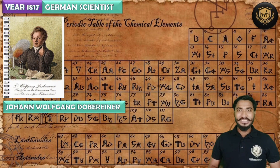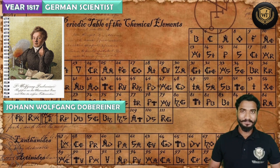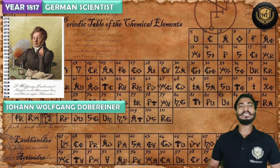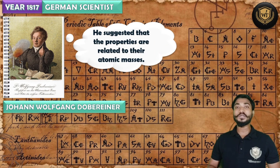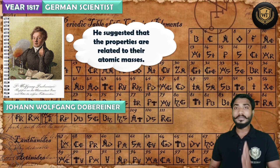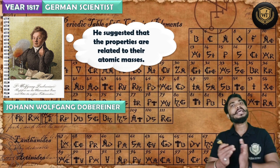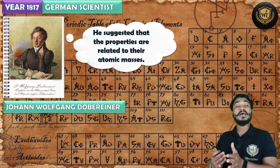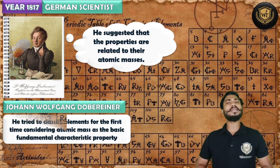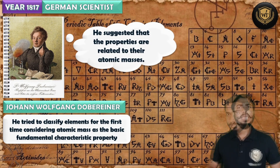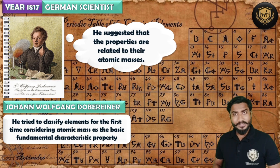The real journey to classify the elements began in the year 1870, done by a German scientist whose name was Johan Wolfgang Dobereiner. Dobereiner established a relationship between the mass of the element and their properties — physical properties and chemical properties. He tried to classify elements for the first time, taking atomic mass as the basic fundamental characteristic property.